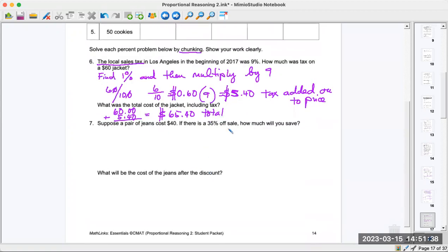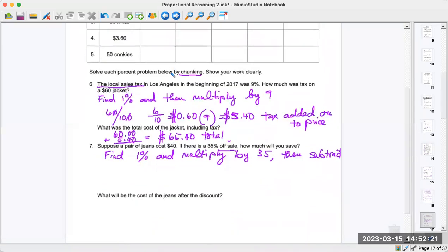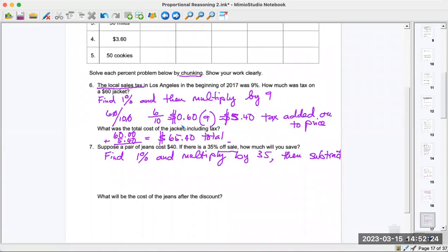Now this is an off. So you subtract. Find 1% and then subtract because it's not adding, it's subtracting. $40. There's a $35 off sale. So you always find 1% and multiply by 35. And then you subtract because it's not adding. Here we add it. You would subtract it from 40. I didn't give you the answers in number 7. I gave you the answer in number 6. Number 6 is done, just to show you.